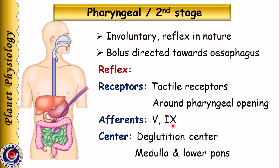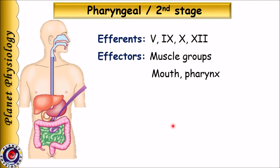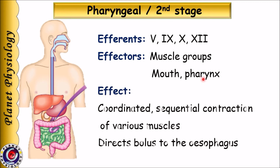The afferents for the deglutation reflex are the trigeminal and glossopharyngeal nerves. The deglutation centre is located in the medulla and lower pons. From here, efferent signals are transmitted through the 5th, 9th, 10th, and 12th cranial nerves, which innervate various muscle groups in the oral cavity as well as pharynx, bringing about coordinated sequential contractions to direct the bolus to the esophagus.